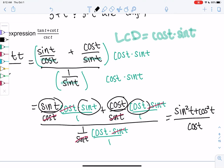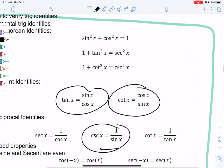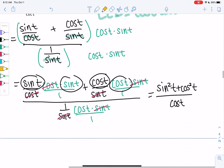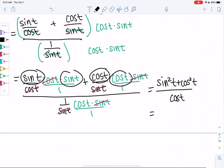So what was sine squared plus cosine squared? This is probably the one identity you want to remember because it's going to pop up so much. So that would be 1. So we'll just have 1 over cosine which is secant.